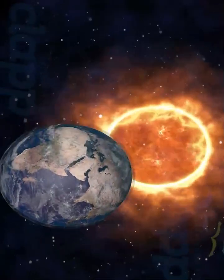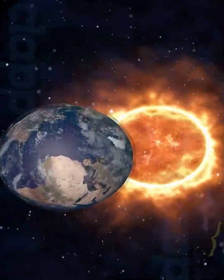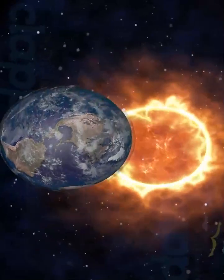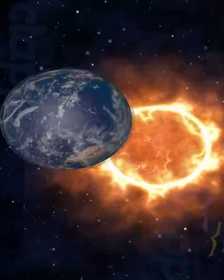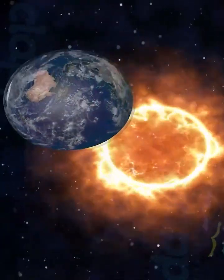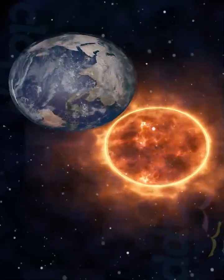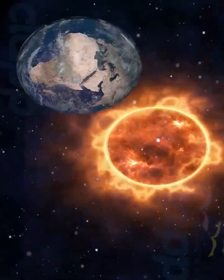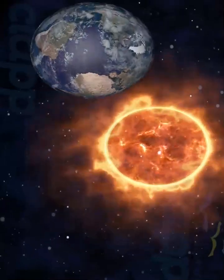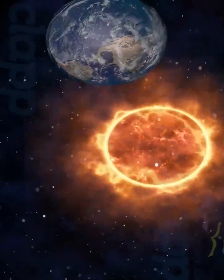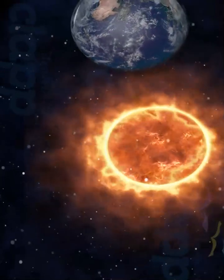29.2% of Earth's surface is land consisting of continents and islands. The remaining 70.8% is covered with water. Much of Earth's polar regions is covered in ice. Earth's atmosphere consists mostly of nitrogen and oxygen.